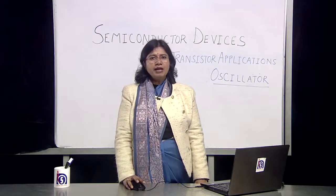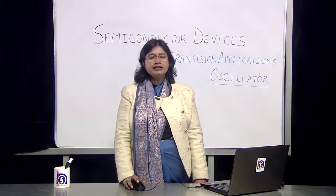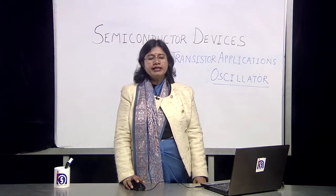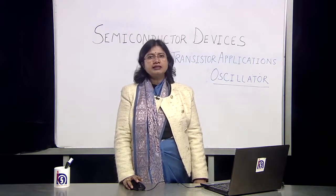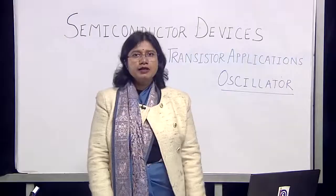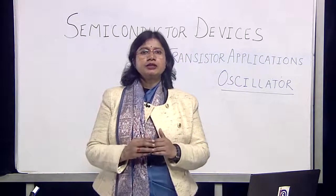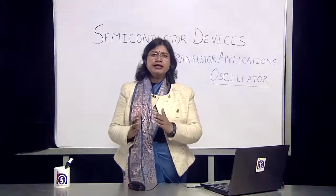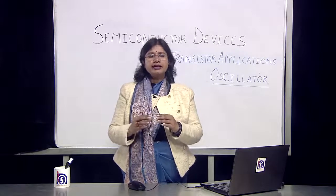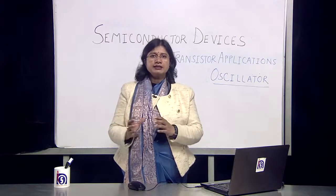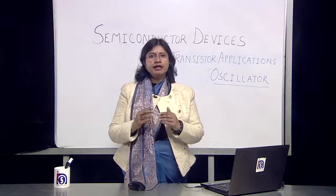This amplifier plus the feedback mechanism becomes an oscillator, and these oscillators are used in frequency generation, in generation of sine waves, cosine waves, square waves, and so on. These oscillators are extremely useful. In this topic we have used a transistor in a common emitter configuration working like an oscillator — a device capable of generating sustained electrical pulses, including sine waves and cosine waves.